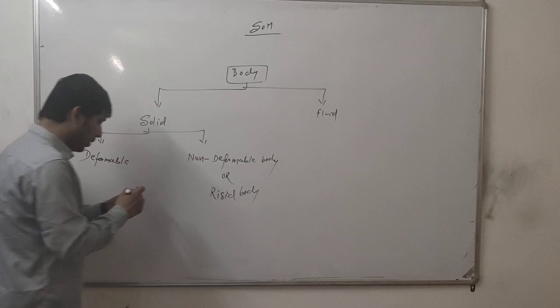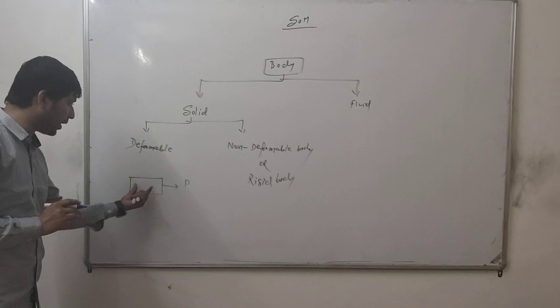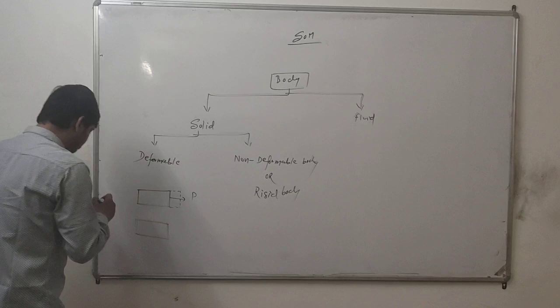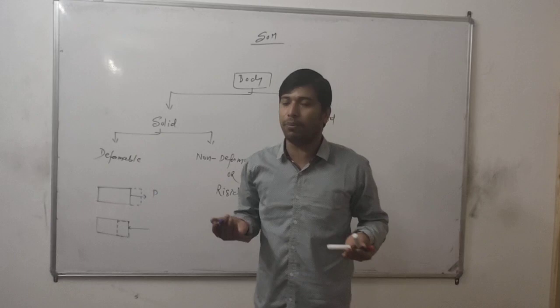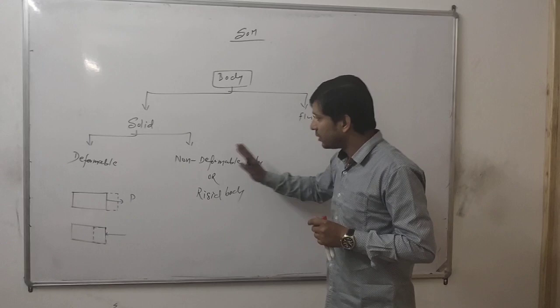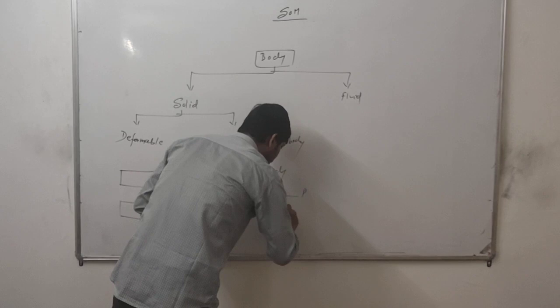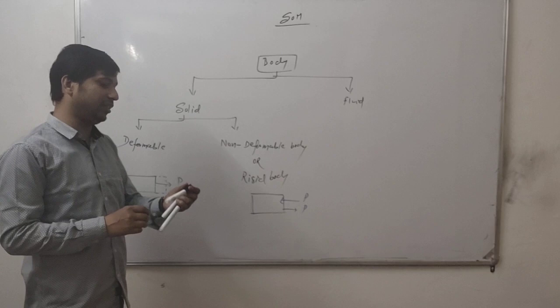What happens to a deformable body? If we apply a tensile load, the body length will increment. If we apply a compressive load, the body length will decrement. This is called a deformable body — where load or force causes body length or height to increment or decrement. For a non-deformable or rigid body, applying compressive or tensile force causes no change in body length or height.